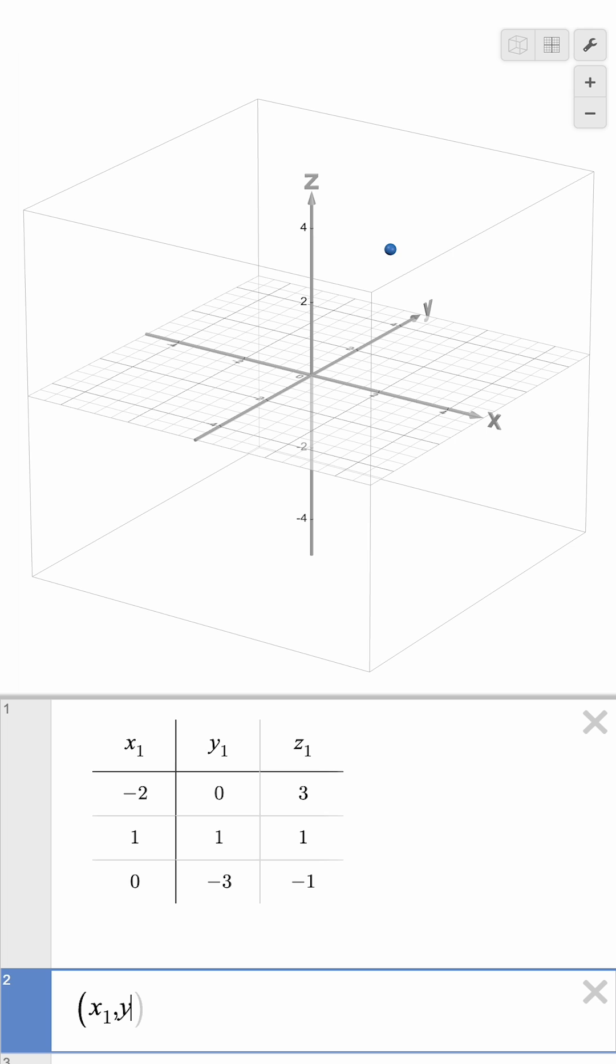but in a new expression line, we can type x1, y1, z1, and it will plot all the points defined by those values in the table.